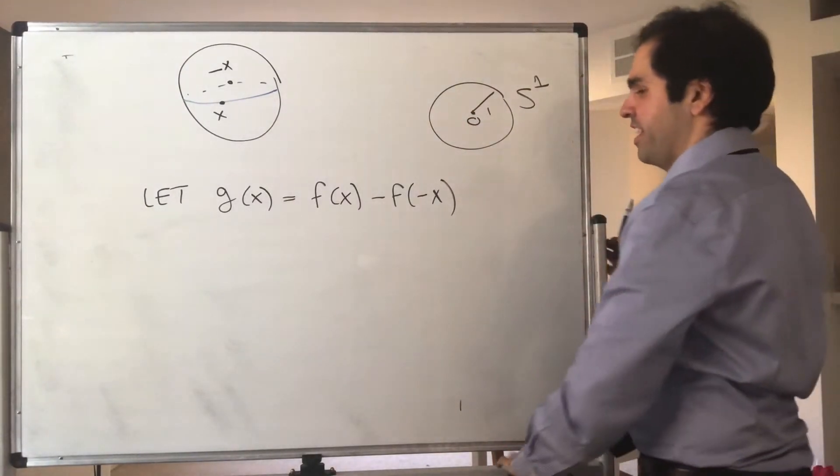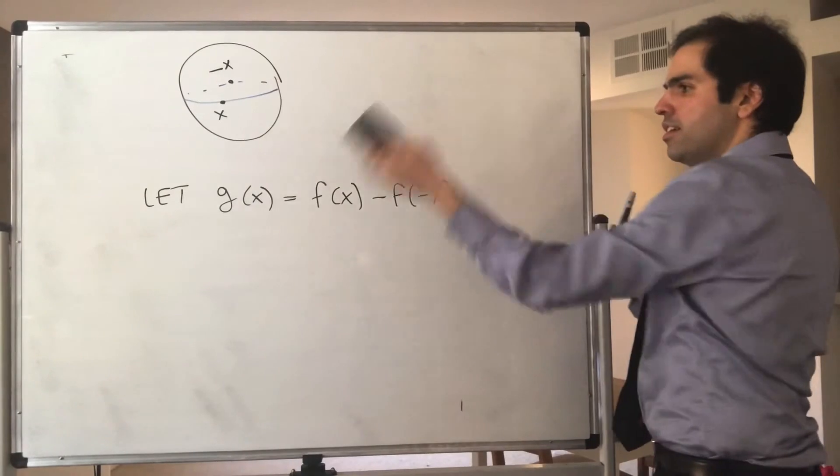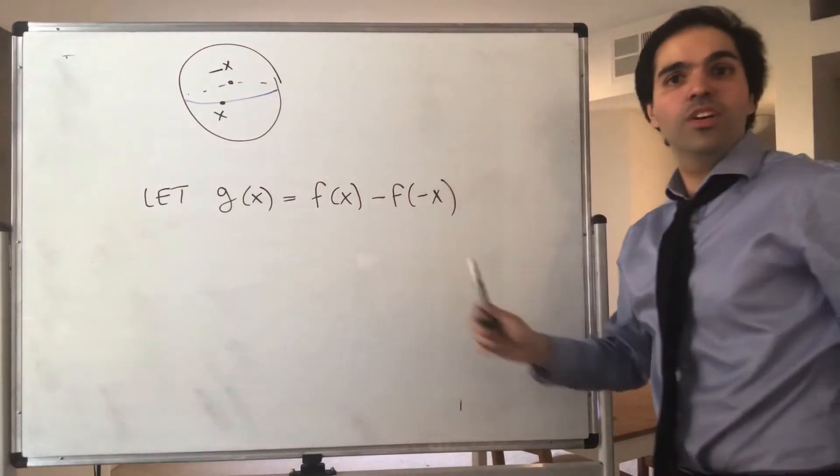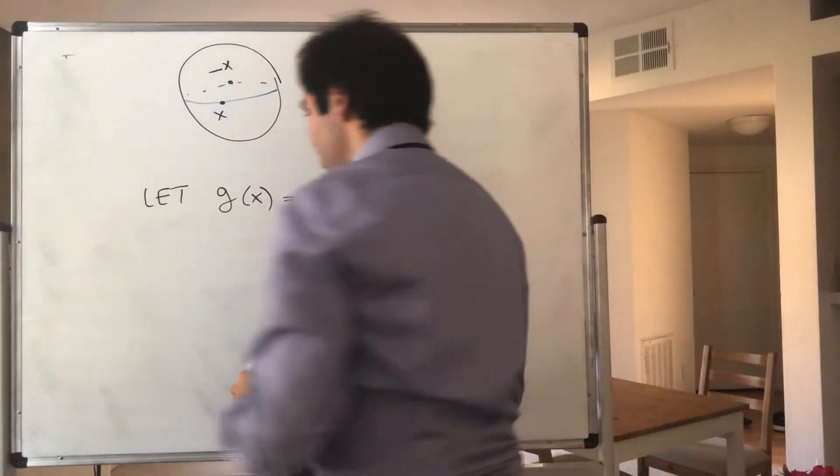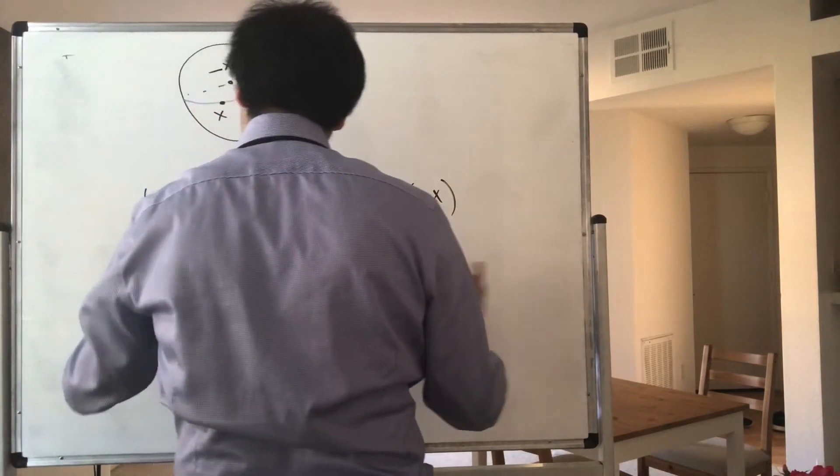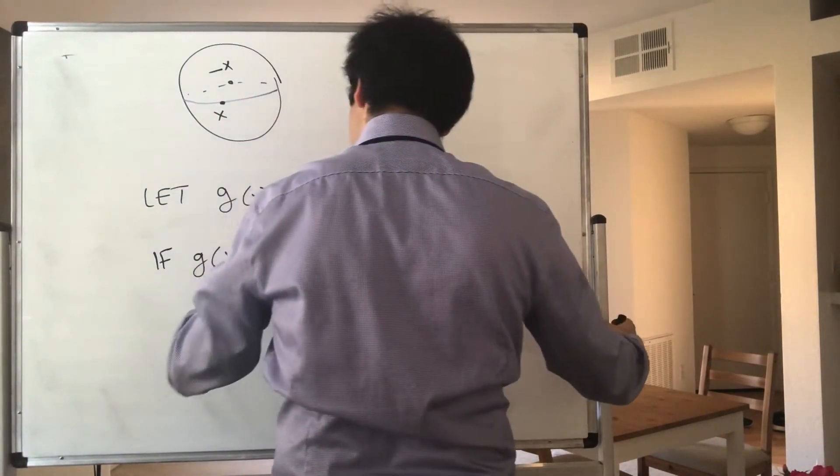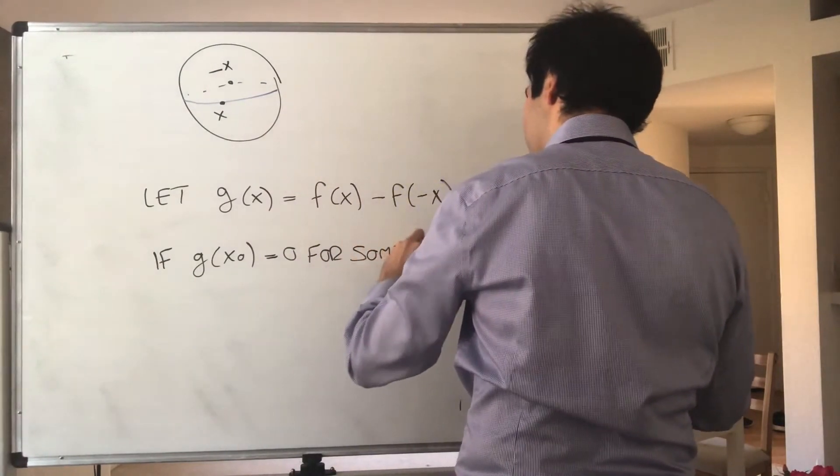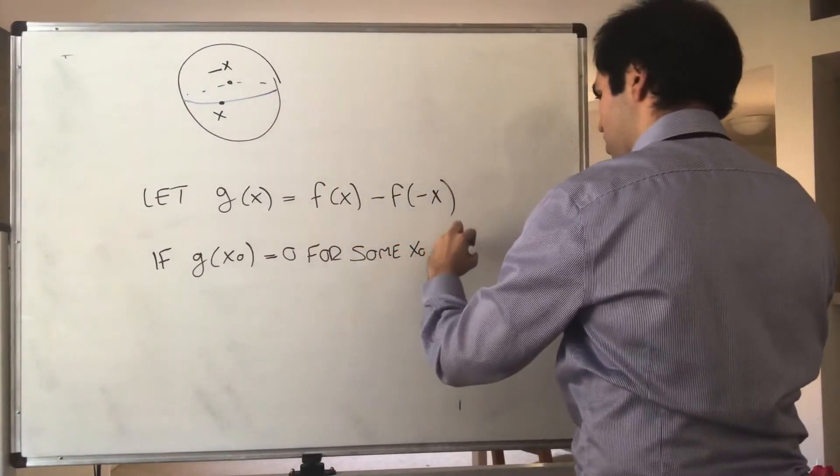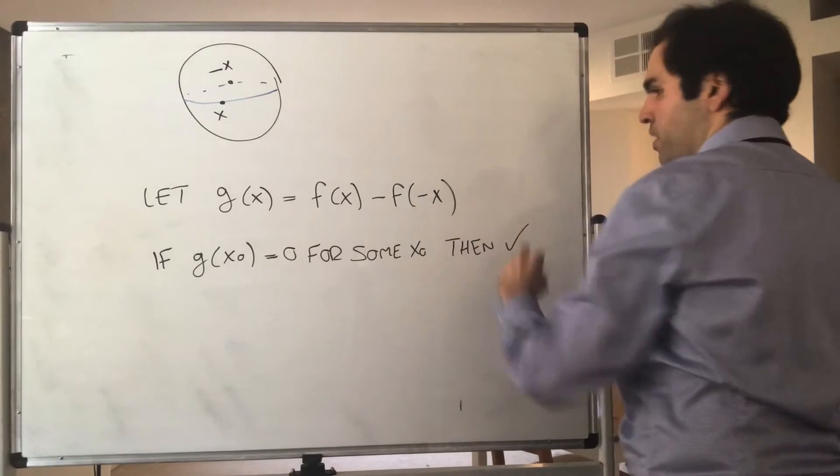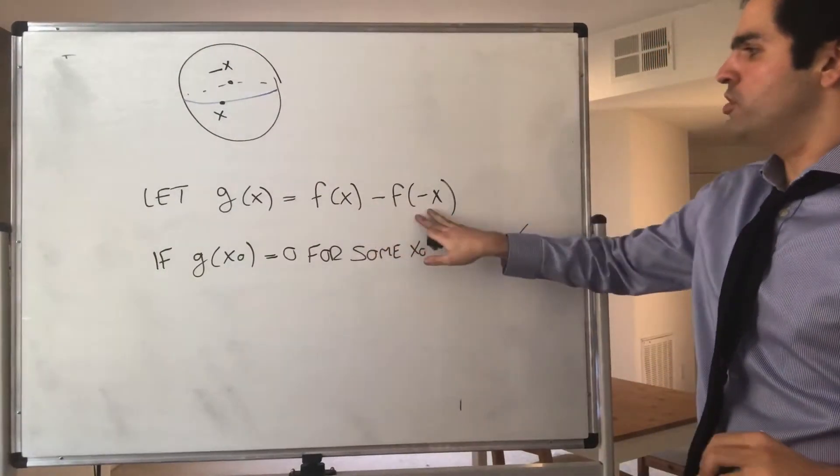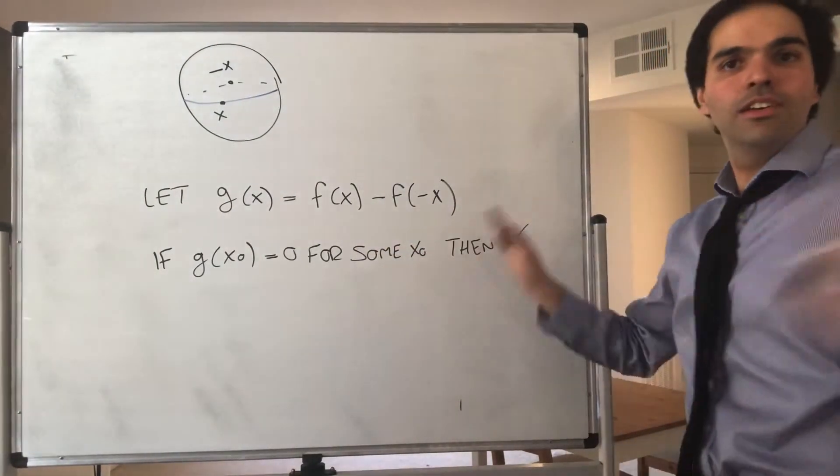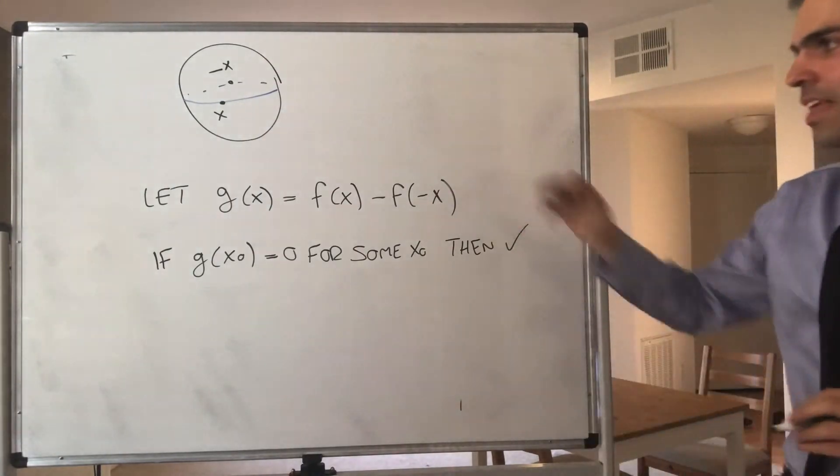However, here's the thing. If g(x₀) equals 0 for some x₀, then we're done. Because then f(x₀) would be f(-x₀), and then just choose that x₀.